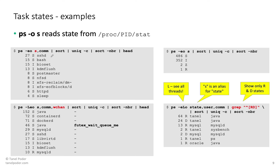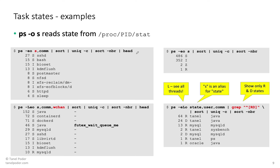When you run PS and show the state, you can say: show me all processes in the system but only the state and command name. Then 'sort | uniq -c' essentially does a GROUP BY in SQL. You see, for example, 27 processes that happened to be in sleep state for sshd. You can order by the biggest number of processes first and limit the output — it's like very poor man's SQL, Unix sysadmin SQL essentially.